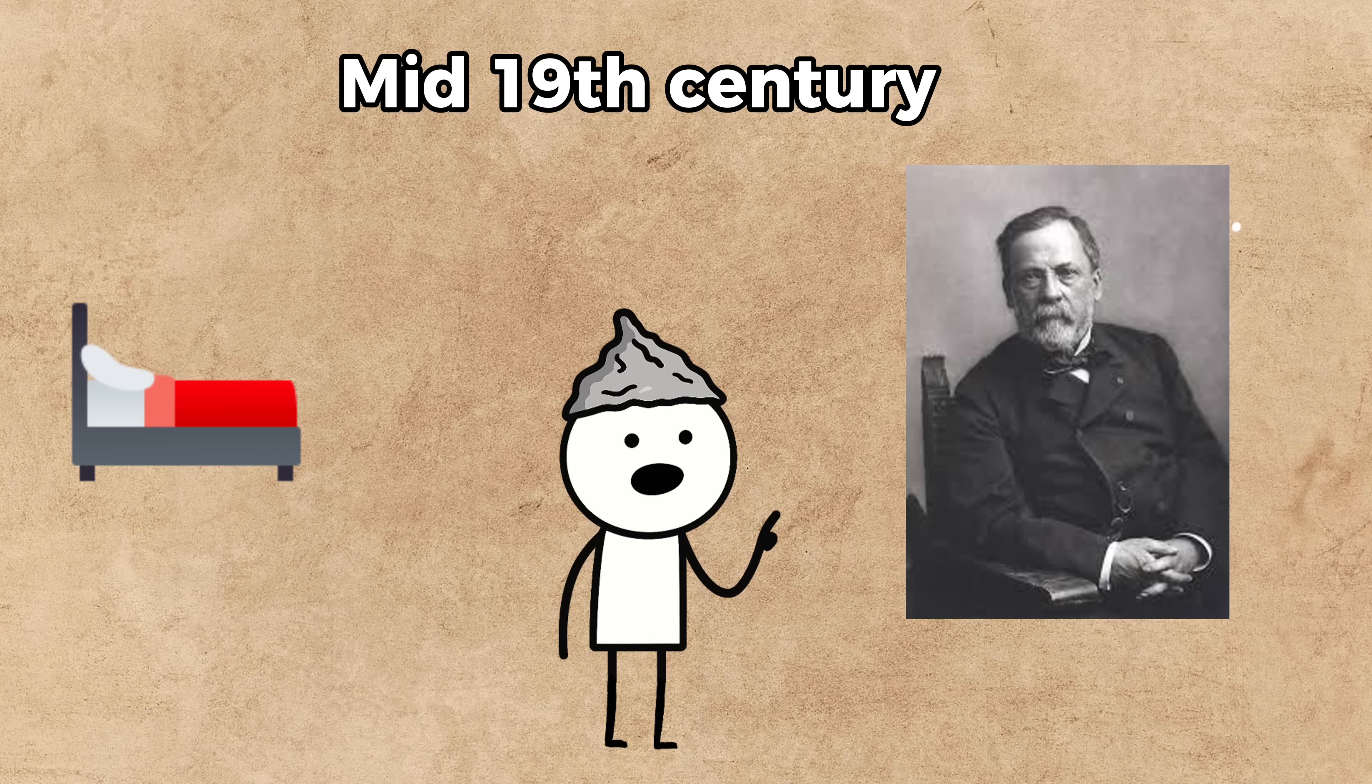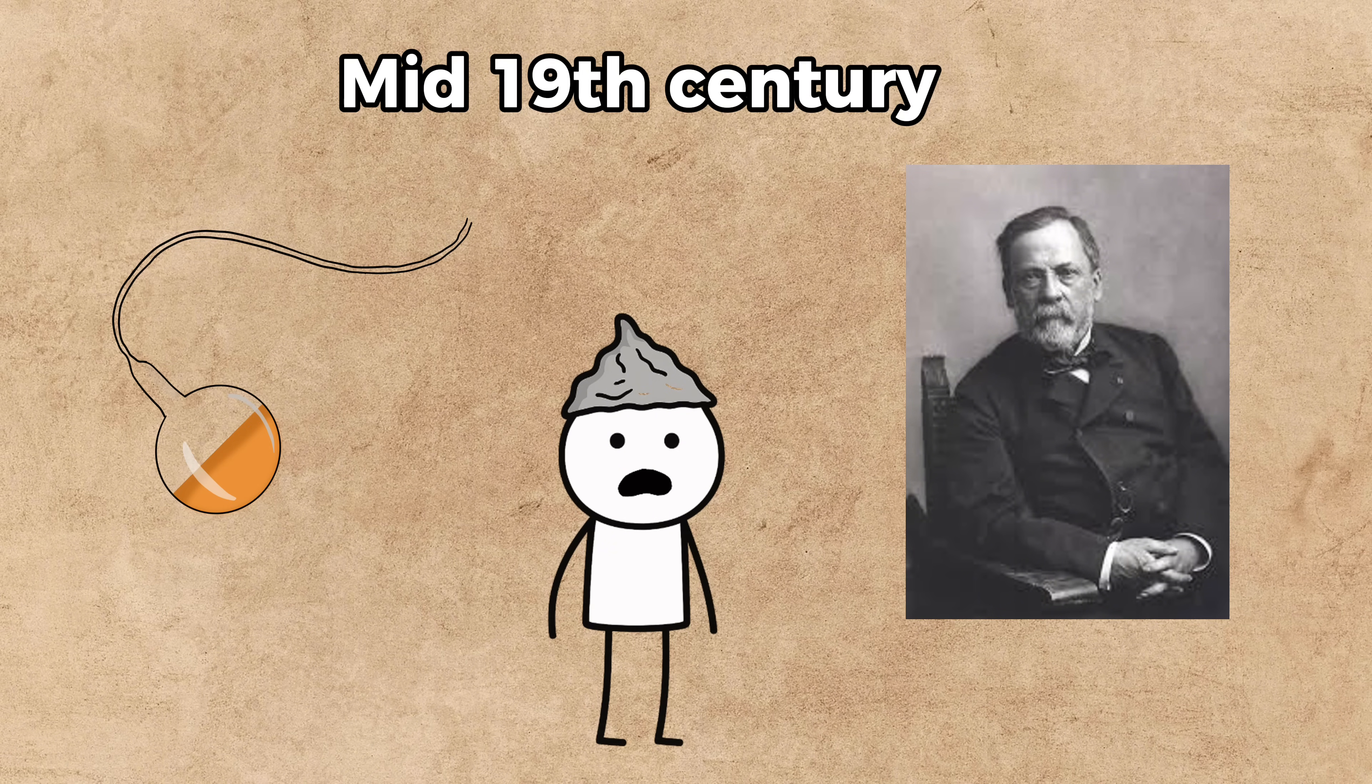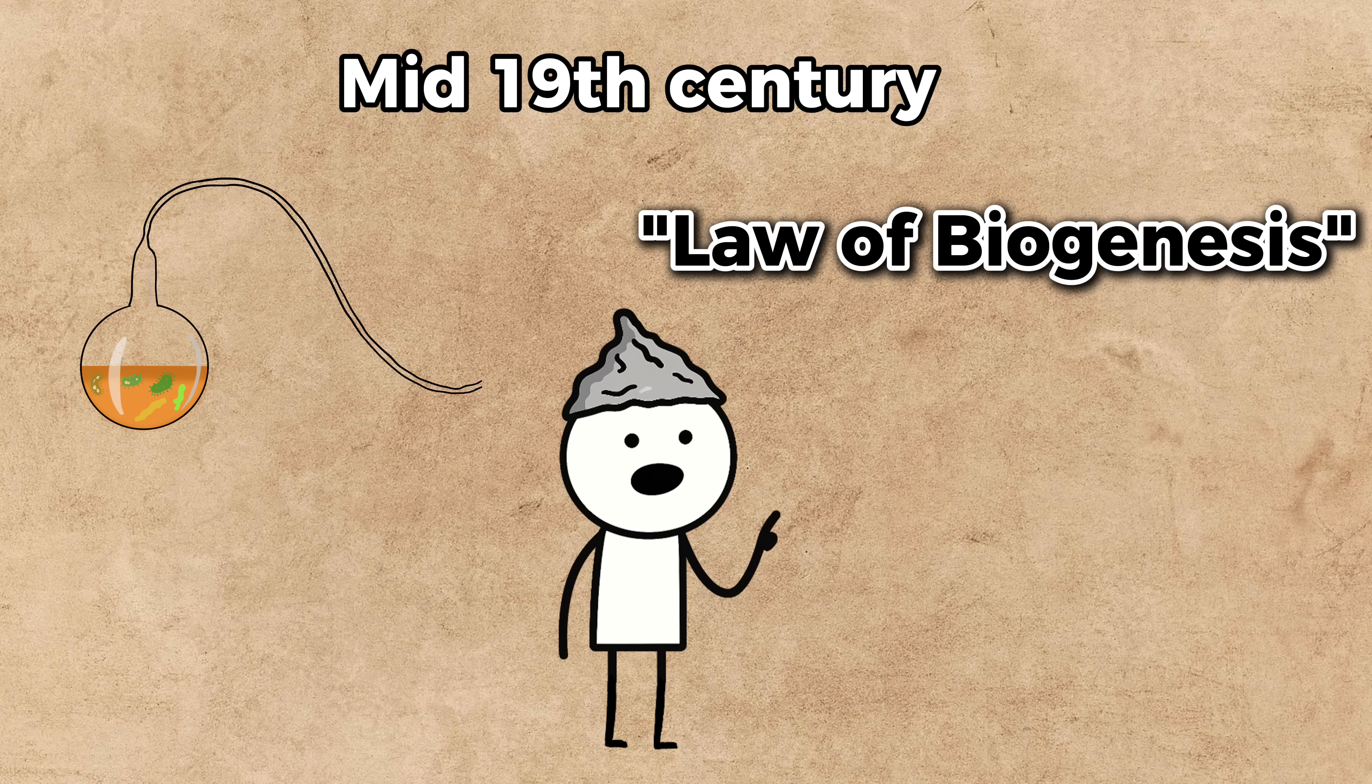In a brilliant experiment, he used a special swan neck flask. He boiled broth inside it, killing any existing microbes, but the flask's shape allowed air to get in while trapping airborne dust and spores in its curved neck. The broth stayed perfectly sterile, but as soon as he tipped the flask to let the trapped gunk touch the broth, it exploded with life. He proved that life comes from other life, a concept so fundamental we now call it the law of biogenesis.